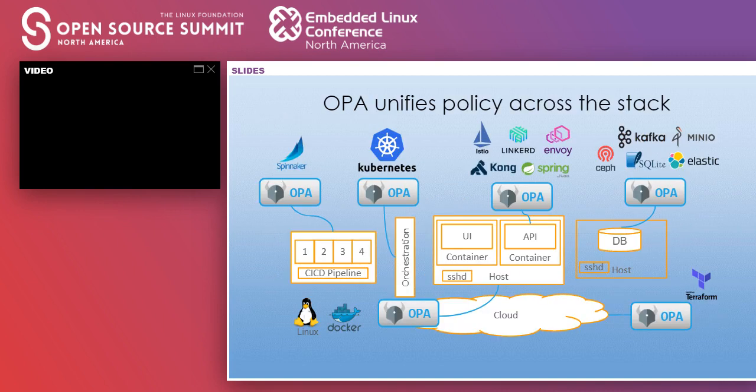OPA is integrated with more than 20 open source projects — this is just a snapshot of those projects. One of the hottest use cases for OPA is admission control in Kubernetes. Admission control is essentially a piece of code that intercepts requests to the Kubernetes API server before that request is actually persisted in etcd.